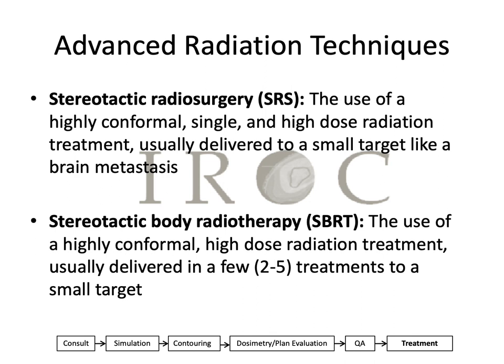Stereotactic radiosurgery comes from the gamma knife era — it's the use of highly conformal, single, high-dose radiation treatment usually delivered to a small target like a brain metastasis. For billing purposes, stereotactic radiosurgery is considered a single fraction, whereas stereotactic body radiotherapy is a bit more broad because it includes two to five treatments. Both of these rely a lot on image guidance because the whole idea with stereotactic is that you're localizing your target prior to turning on the beam.